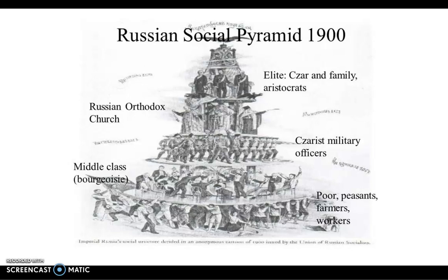This opening picture was drawn in 1900 and it shows visually the kind of basic structure of the Tsarist social hierarchy. At the top you've got the Tsar — note, normally it's spelled Tsar, T-S-A-R, but sometimes you do see it spelled in this alternative way. So it gives you a bit of a visual overview about what society was like in around 1900.